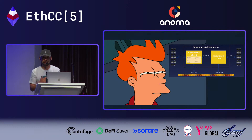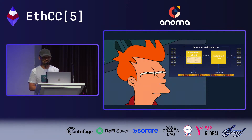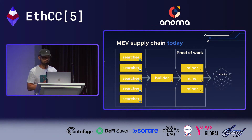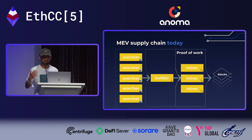So is this it? Are we done? Can we go home? Is this the merge? Probably not. So let me give you a few more examples on why we have to do a little bit more. This is the MEV supply chain today. You have your searcher which looks at private and public mempool. They look at transactions to extract value and send to the builder, builder sends to the miner, miner competes on producing the block, and then whoever solves the puzzle gets to extend the blockchain by one. That's nice.